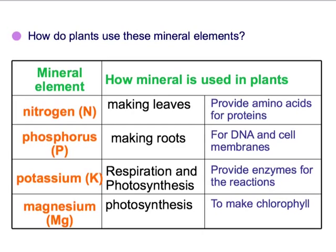Potassium is used in respiration and photosynthesis, providing enzymes with the ability to carry out those reactions. And then the last one, magnesium, is definitely needed for photosynthesis, as magnesium is the central metal in the chlorophyll molecule.